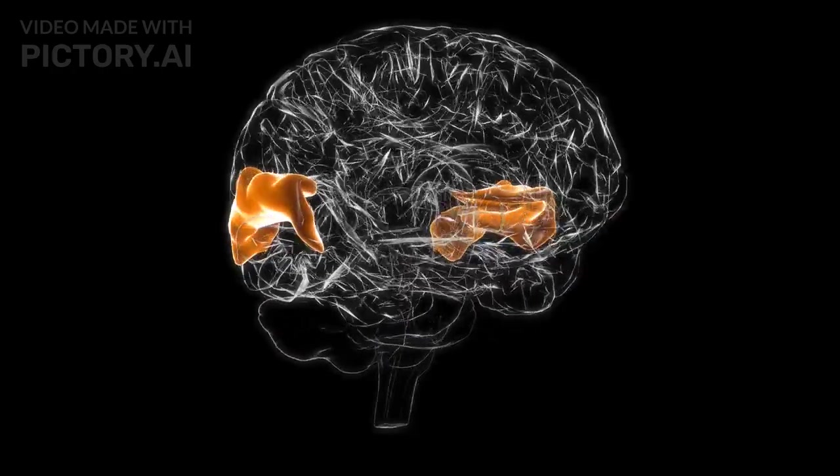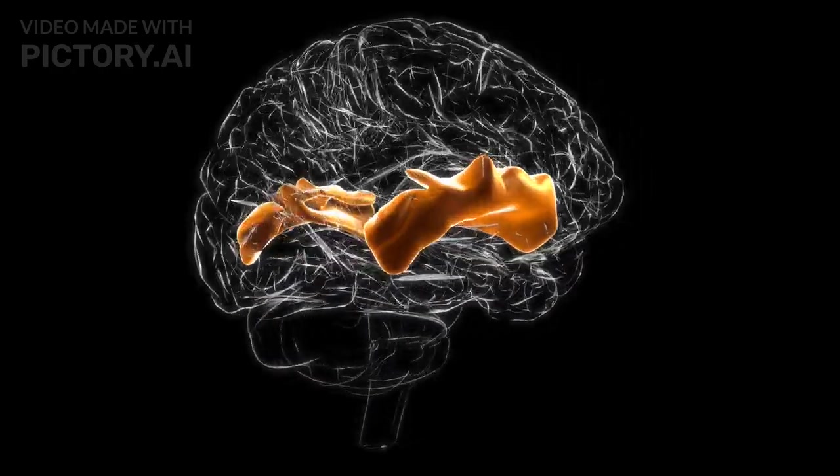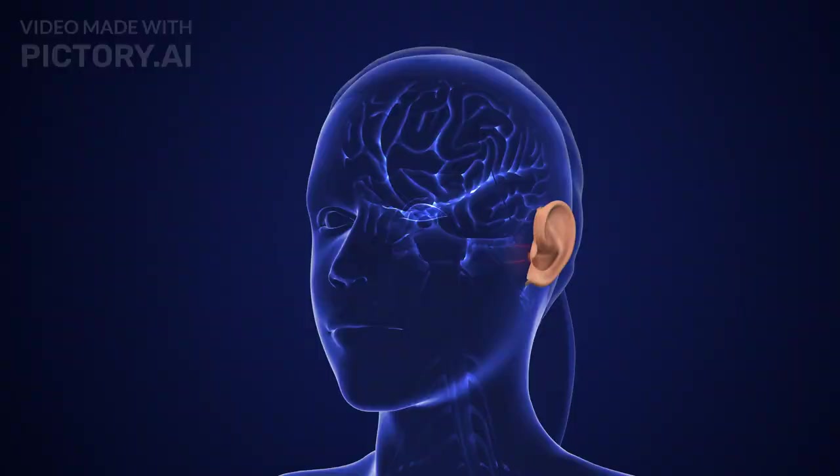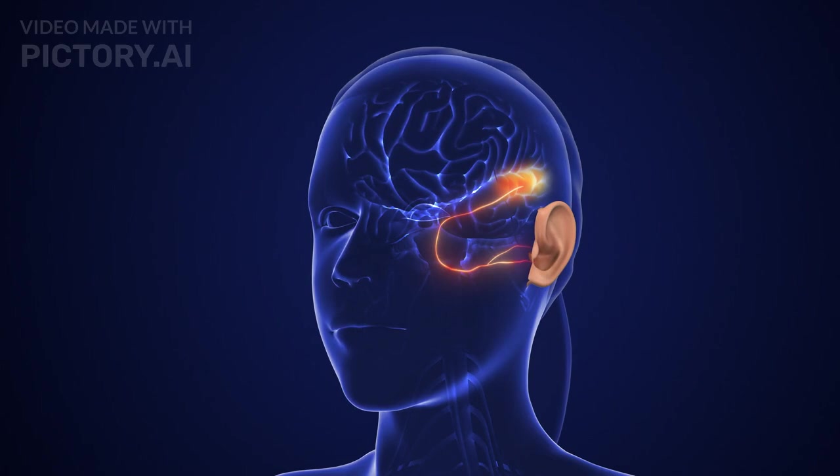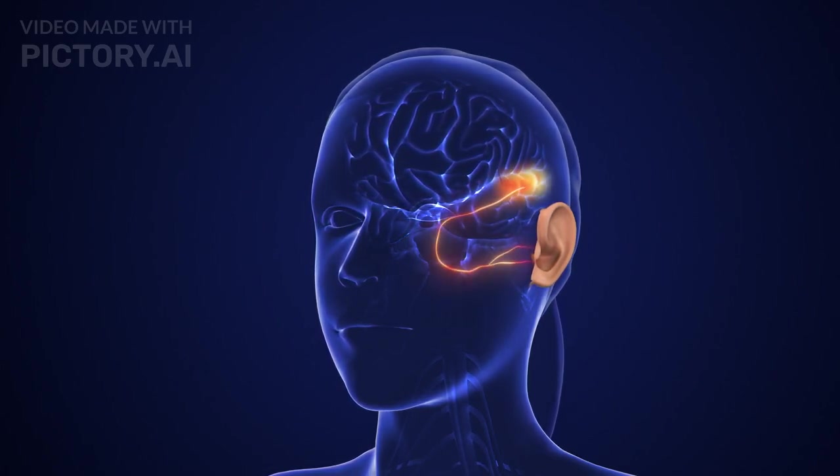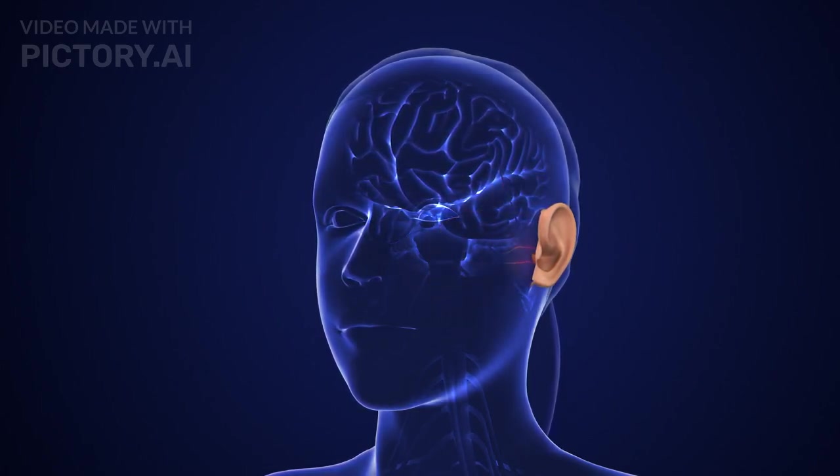These signals travel to the auditory cortex, a specialized area in the brain responsible for processing sound. Here, the signals are interpreted, enabling us to recognize and differentiate various sounds such as speech, music, or environmental noises.